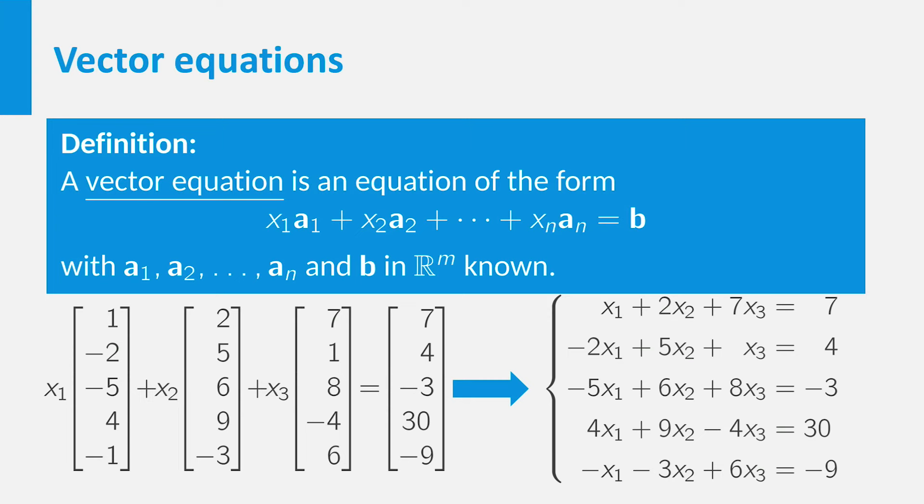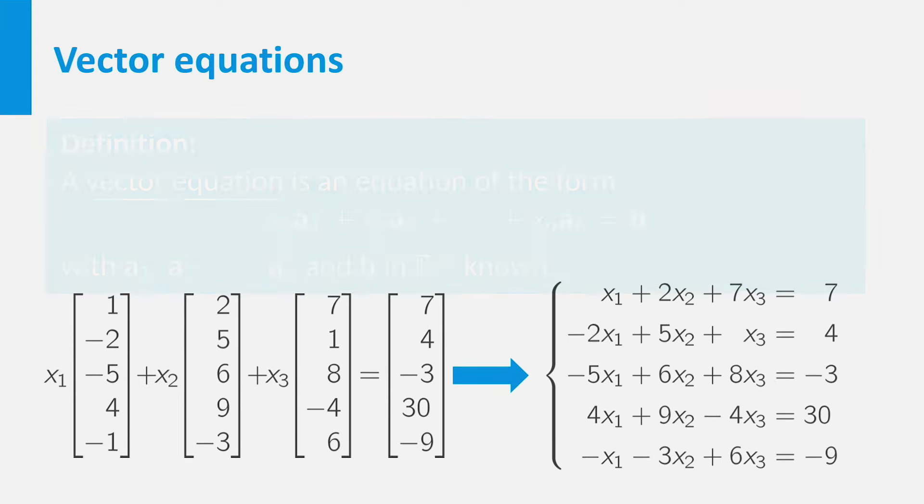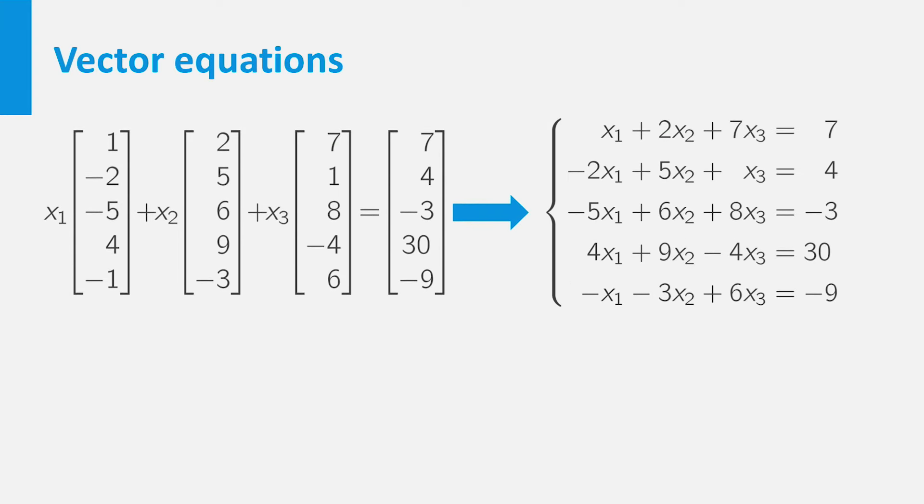You can even take things a little bit further. If you want to solve the vector equation on the left, you can rewrite it to the linear system on the right. This linear system you can solve by writing the augmented matrix and using elementary row operations.